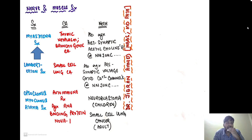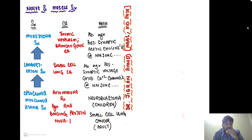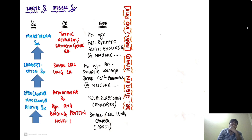First is myasthenic syndrome, seen in thymic neoplasm and bronchogenic carcinoma, due to antibody formation against the post-synaptic acetylcholine receptor at the neuromuscular junction. Lambert-Eaton syndrome is seen classically in small cell lung carcinoma, where antibodies form against pre-synaptic voltage-gated calcium channels. Opsoclonus-myoclonus-ataxia syndrome is classically seen in neuroblastoma in children and small cell lung carcinoma in adults — the mechanism being autoimmune reaction against the RNA-binding protein NOVA1.